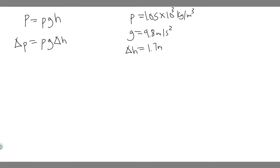So this right here, if we go ahead and plug it in, it's going to be equal to 1.05 times 10 to the 3. So when you go ahead and do this and plug this in your calculator, you're going to get 1.749 times 10 to the 4 newton per meter squared.